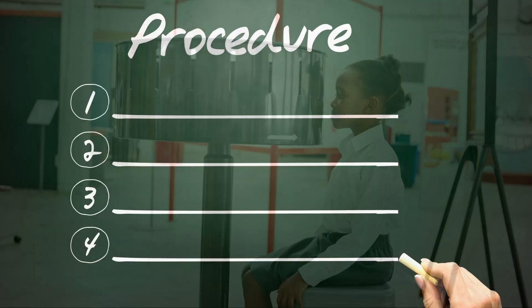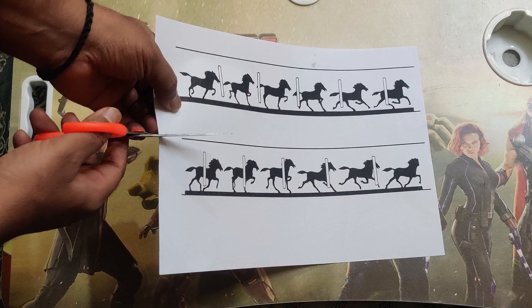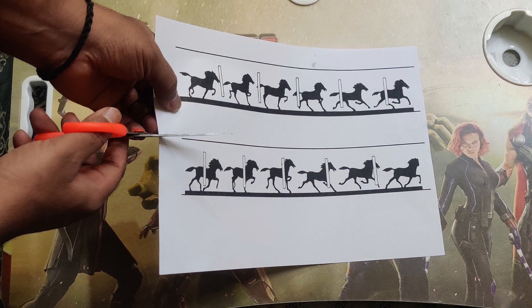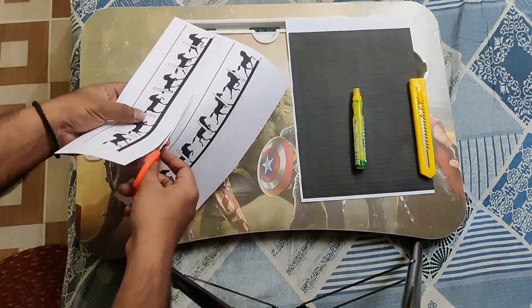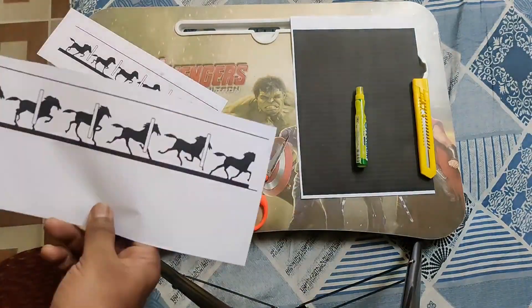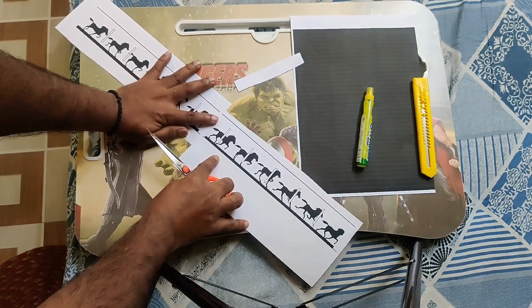Now coming to the procedure of making a zoetrope. Step one is to print out the template for the running horse. The images shown in the template demonstrate several phases of the horse's movements. Step two is to make two long strips from the template printout by cutting along the line using scissors. Third step is to create a longer strip by joining two along their length. Apart from this, an A4 black sheet was also cut into a strip of the same dimensions. Glue is then used to adhere these two strips together.